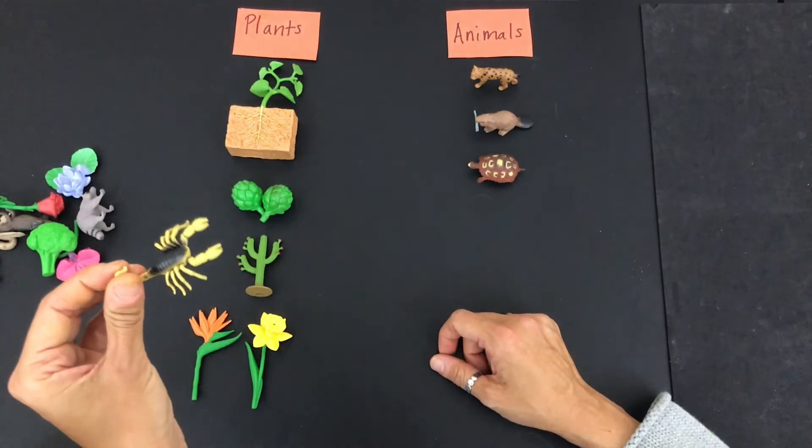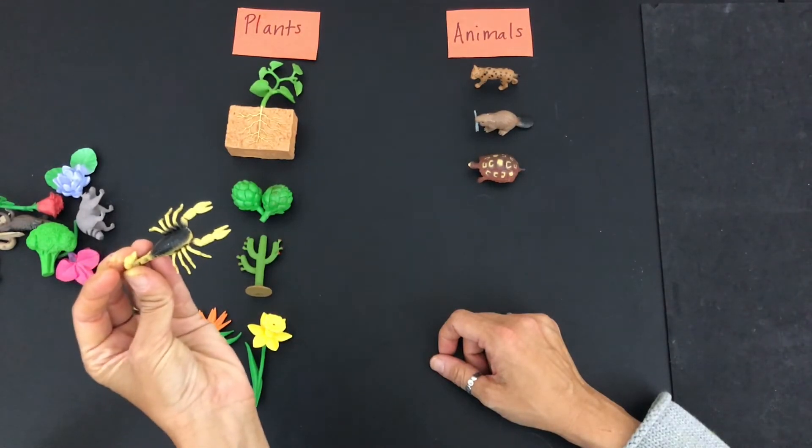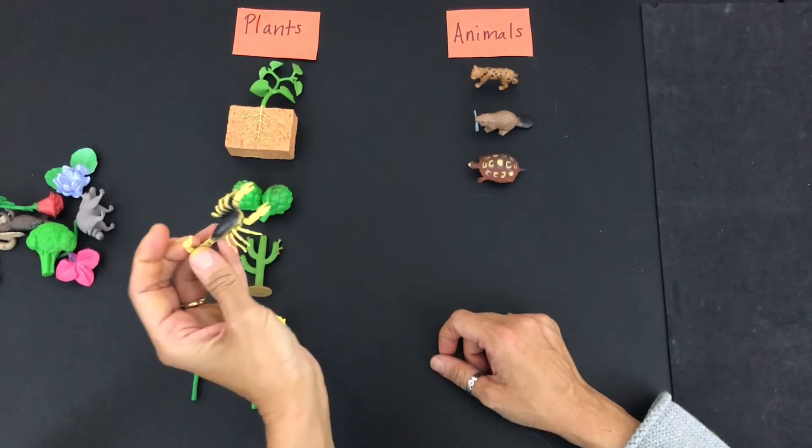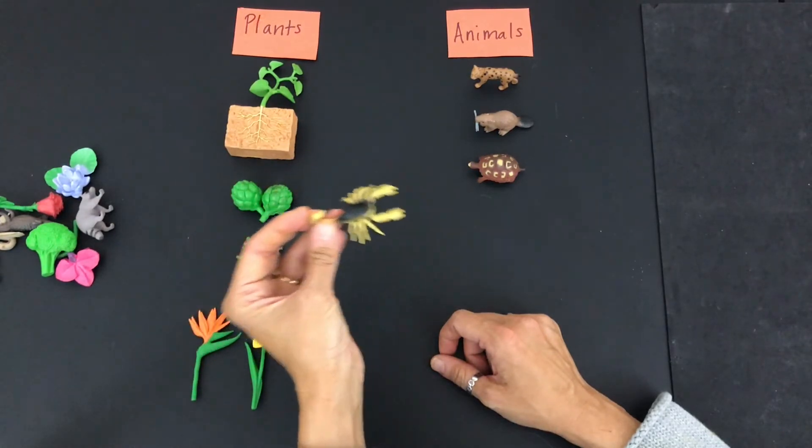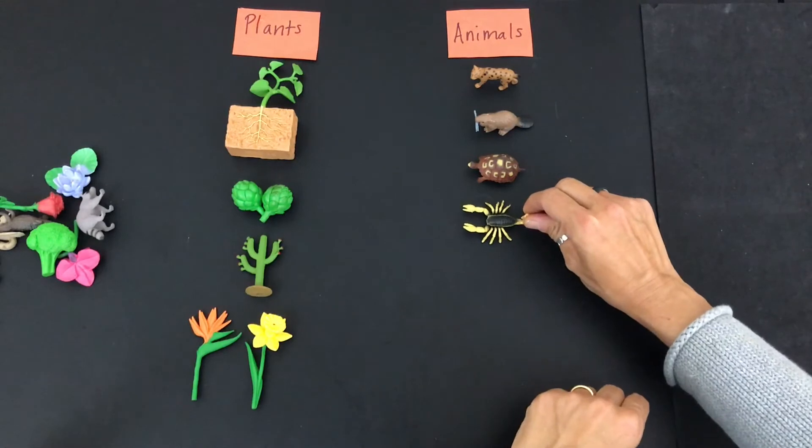Oh, I just saw one of these in the desert when we were camping. Anybody know what that is? That's a scorpion. Is that a plant or an animal? Yes, it is an animal.